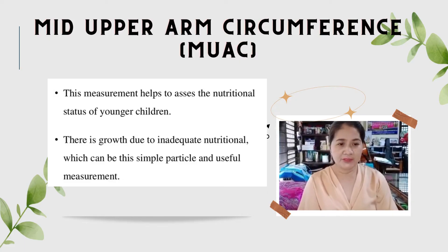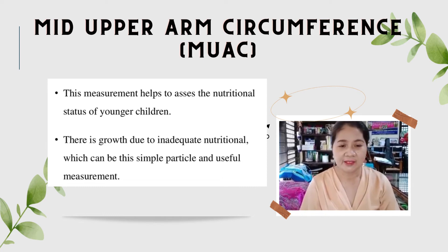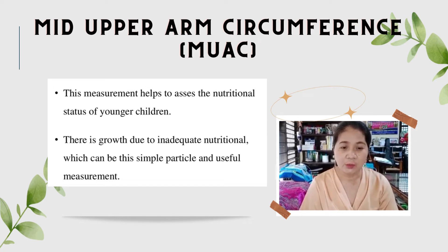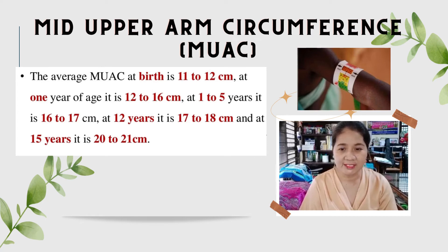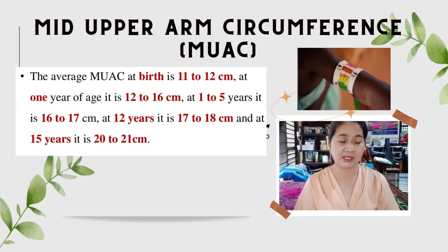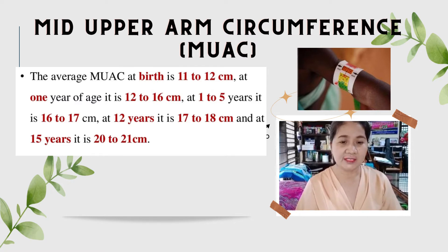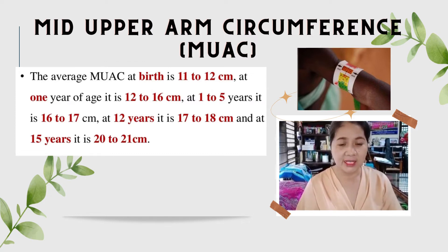Mid-Upper Arm Circumference, or MUAC, helps to assess the nutritional status of younger children. The average MUAC at birth is 11 to 12 cm; at 1 year of age, it is 12 cm; at 1 to 5 years, it is 16 to 17 cm; at 12 years, it is 17 to 18 cm; and at 15 years, it is 20 to 21 cm.